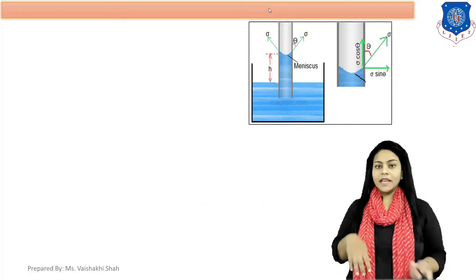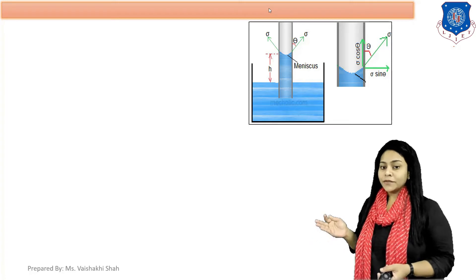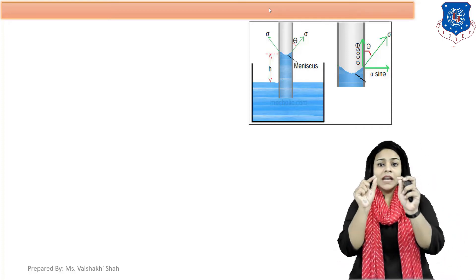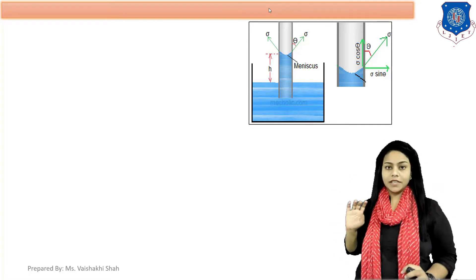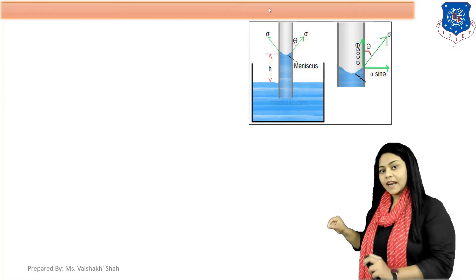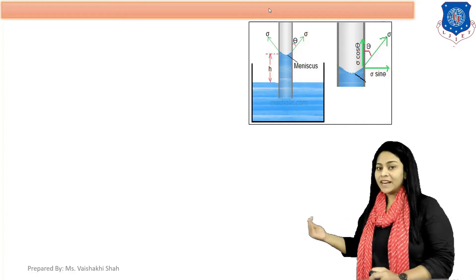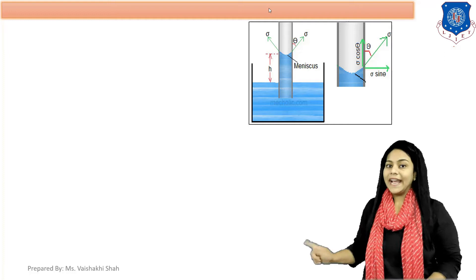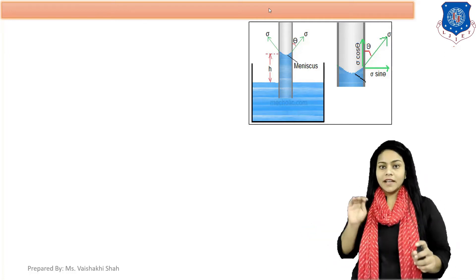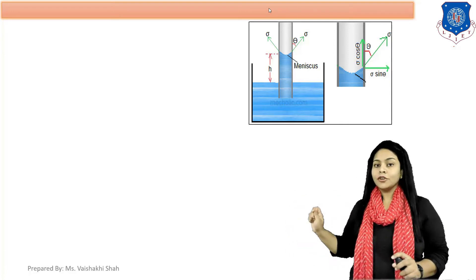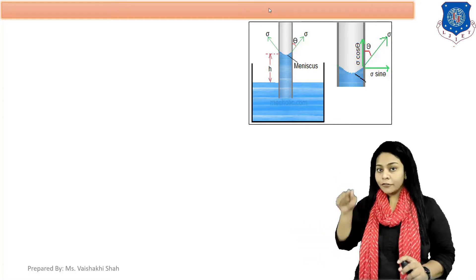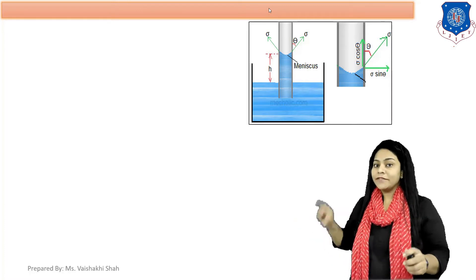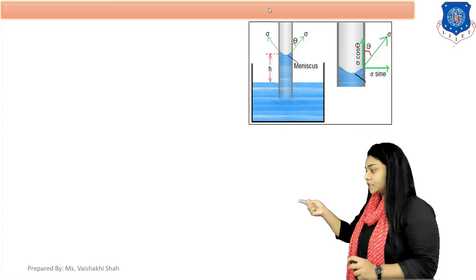Now we will discuss the derivation of capillary rise. As you can see in this diagram, a container is filled with water. If you insert a small glass tube vertically into this container, the liquid from the container rises into the glass tube. The rise of liquid is H. If we are considering water, the rise of water is up to height H, so H is called capillary rise. On the free surface of the glass tube, surface tension is acting — surface tension Sigma.